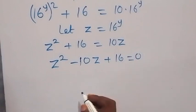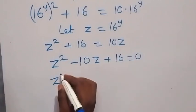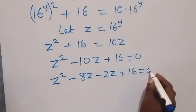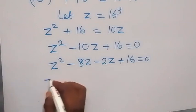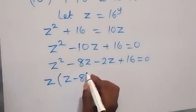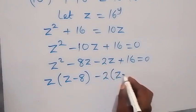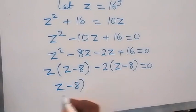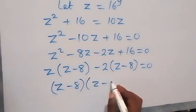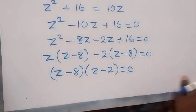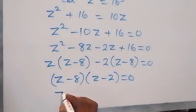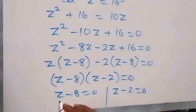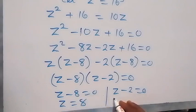Factoring this quadratic: we group and find z minus 8 and z minus 2 as factors, giving us (z minus 8)(z minus 2) equals 0. So the two possible cases are z minus 8 equals 0, giving z equals 8, and z minus 2 equals 0, giving z equals 2.